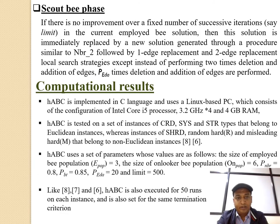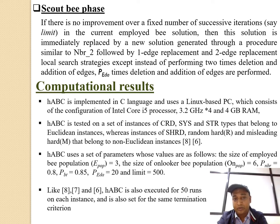Scout bee phase: if there is no improvement over a fixed number of successive iterations in the current employed bee solution, then this solution is assumed to be trapped in a local optimum and is immediately replaced by a new solution generated through a process similar to the neighborhood operator NBR2, followed by one-edge replacement and two-edge replacement local search strategies, except instead of performing 2 times deletion and addition of edges.